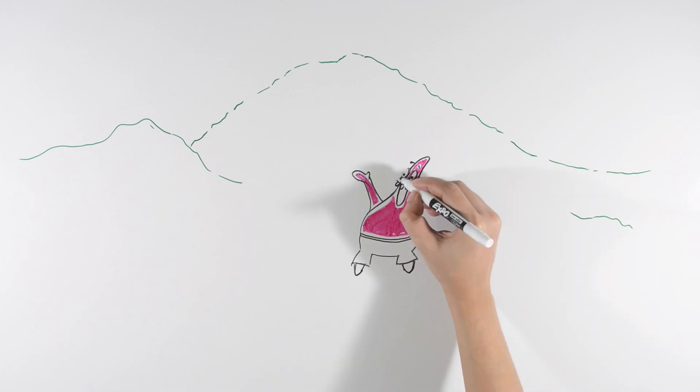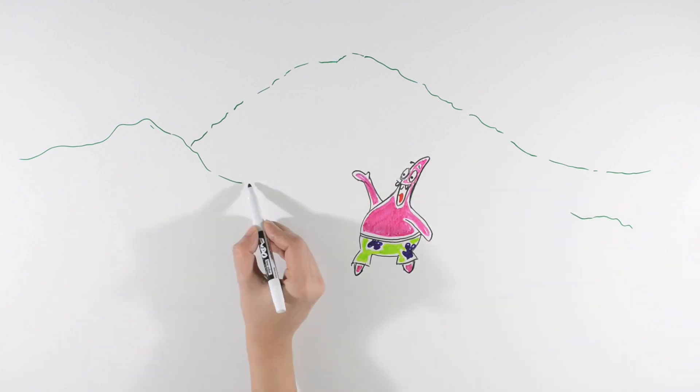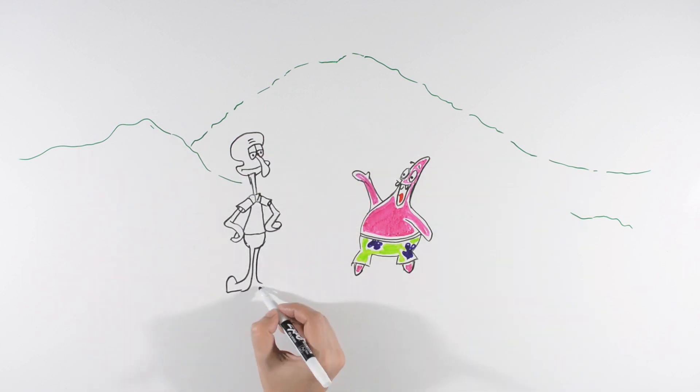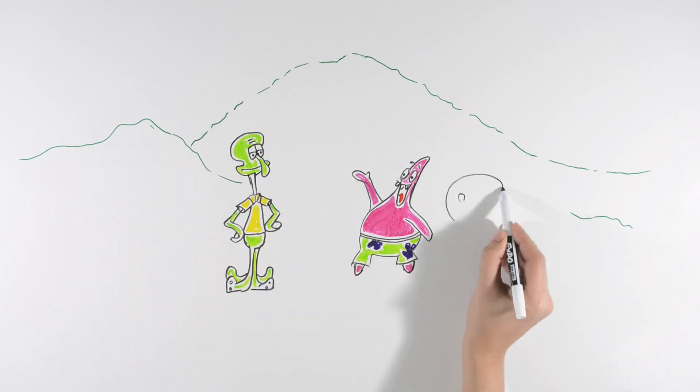SpongeBob's next-door neighbor and coworker at the Krusty Krab is Squidward Tentacles, an arrogant, ill-tempered octopus who lives in an Easter Island head. He hates his job as a cashier but enjoys playing the clarinet and painting self-portraits. He doesn't like living between SpongeBob and Patrick because of their childish nature.